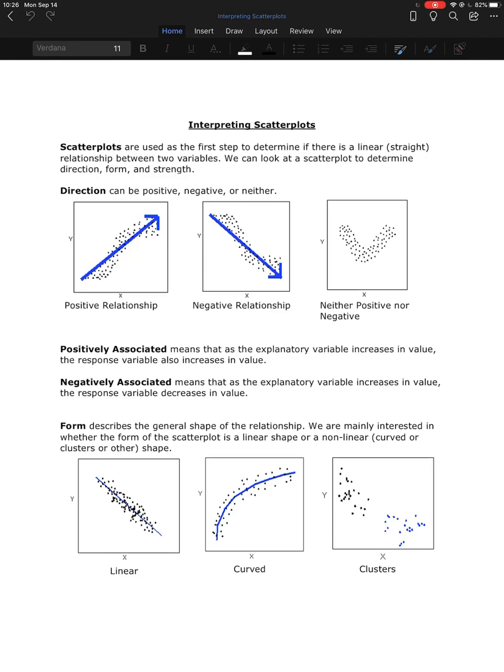All right, so once we've made a scatter plot, we can then use that scatter plot to determine if we have a linear relationship, meaning a straight line relationship with the data. Okay, so we look at the scatter plot and we're going to determine direction, form, and strength.